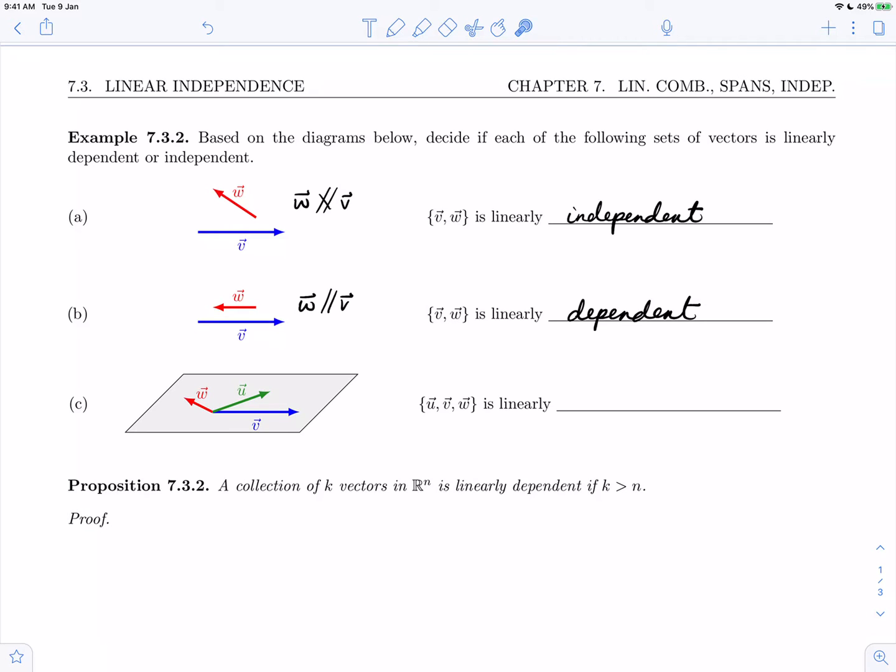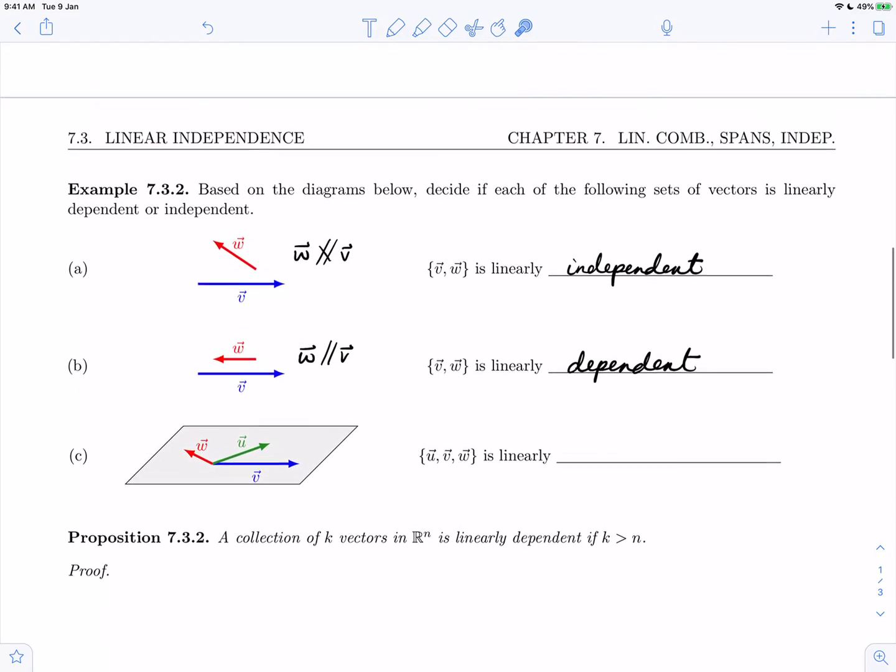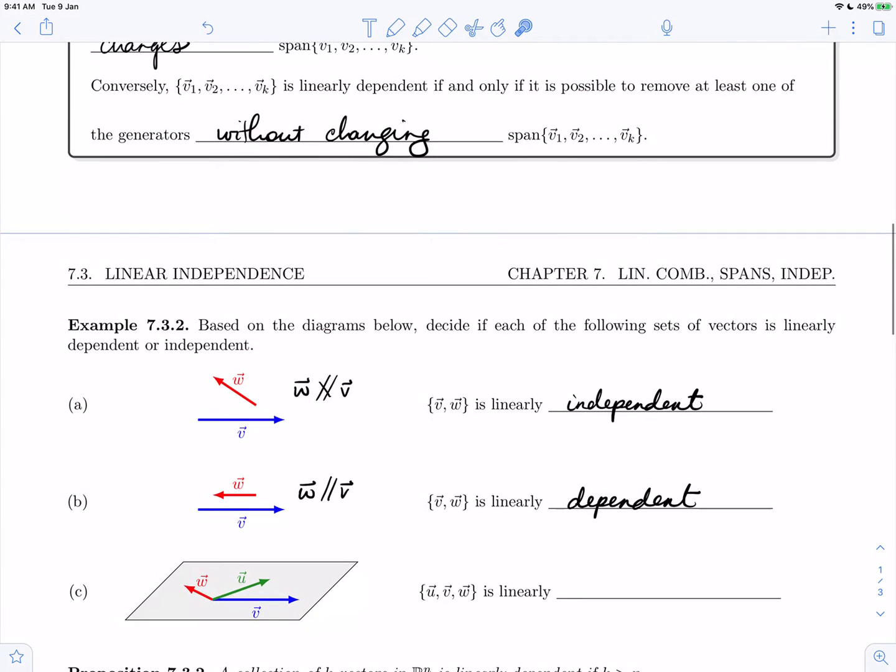Next in part c we're given a situation where we have a set of coplanar vectors. We're actually going to be basing ourselves on the last statement of the takeaway which says the following: A collection of vectors v1 through vk is linearly dependent if and only if it is possible to remove at least one of the generators without changing the span.